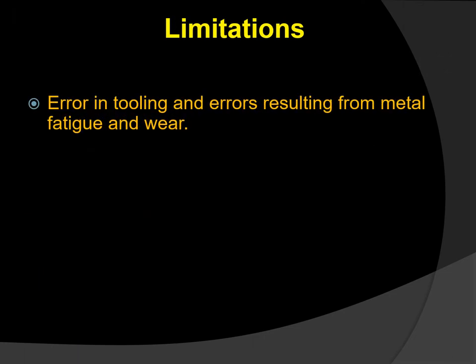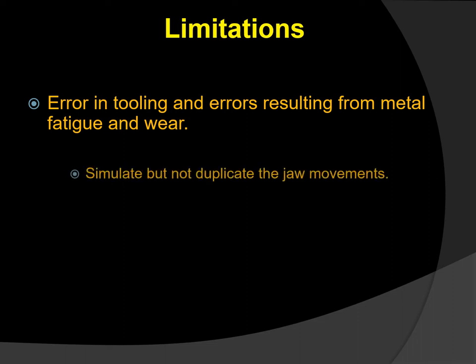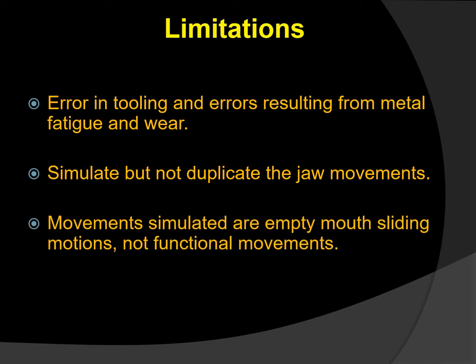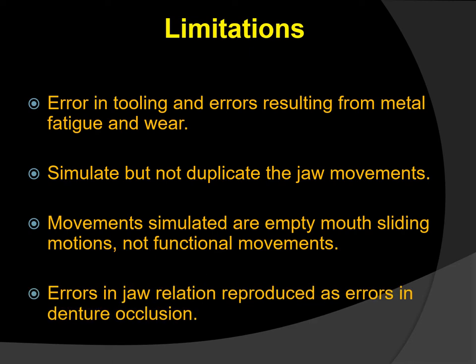Regarding limitations of articulators: an articulator may be made of metal or plastic, and metal articulators can show errors in tooling — that is, manufacturing — or errors resulting from metal fatigue and wear. Articulators only simulate jaw movements; they cannot duplicate jaw movements. It is not possible to match even the fully adjustable articulators with the physiological functioning of the human TMJ. They lack the resiliency as well as the proprioceptive reflexes and the defence mechanism of the human TMJ. Articulators are just a mechanical substitute for the temporomandibular joint, and they can precisely copy only the opening and closing movements in the terminal hinge position.